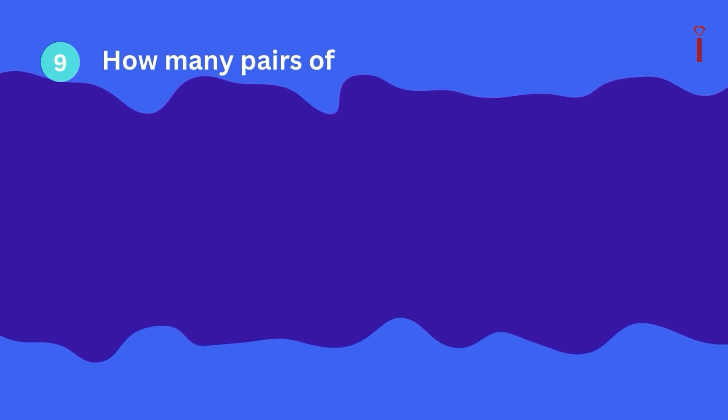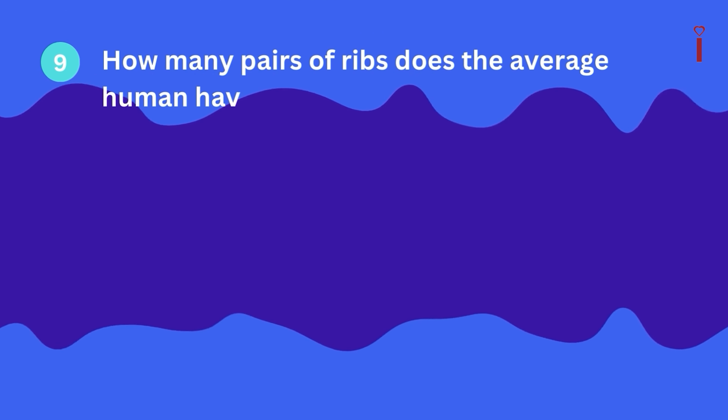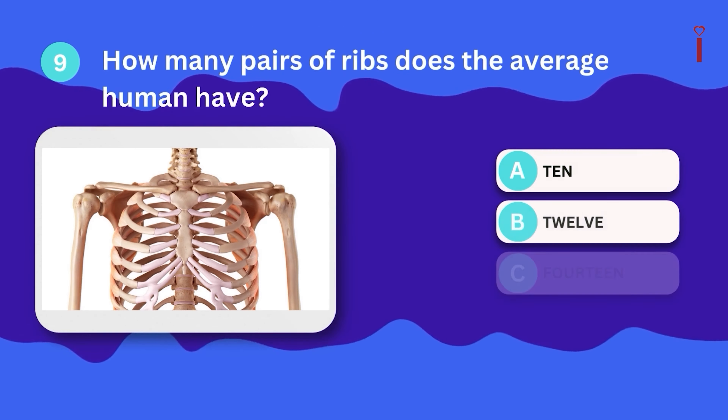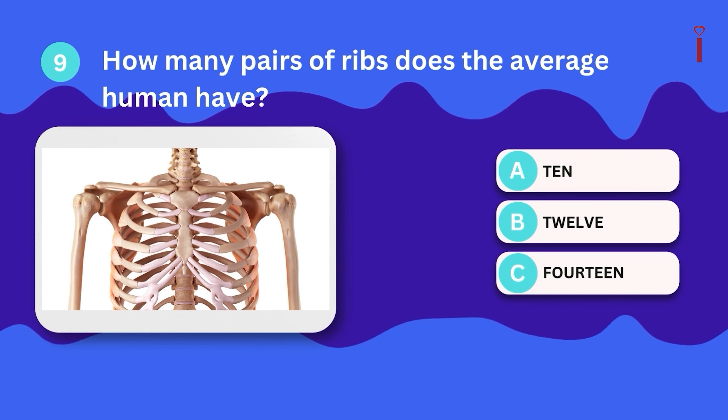Question 9: How many pairs of ribs does the average human have? A. 10, B. 12, C. 14.